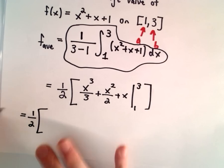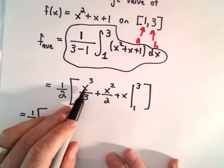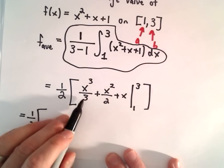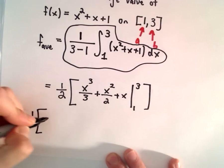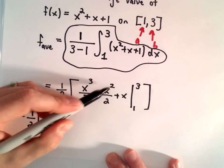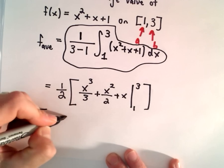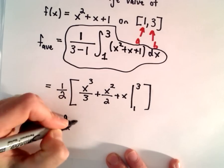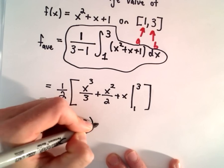Okay, so now it's just sort of plugging and chugging. So if we substitute 3 in, we'll have 3 to the third divided by 3, which is 3 squared or 9. Plus, if we substitute 3 in, we'll get 3 squared or 9 over 2. Then we'll add to that 3. So there's our upper limit of integration.